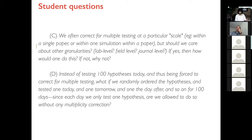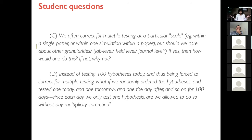The fourth question plays devil's advocate: suppose instead of testing 100 hypotheses today — where you're forced to correct for multiple testing — you randomly order them and test one today, one tomorrow, one the day after, for 100 days. Since each day you only test one hypothesis, are you allowed to do so without any multiplicity correction? When we see hypotheses one at a time, we think there's no need to correct, but there's something unsettling about that.